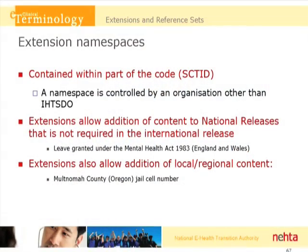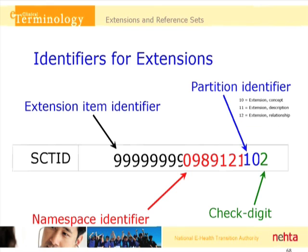There can also be local or regional content, such as a concept from Multnomah County, Oregon. Here's a diagram of the SNOMED Clinical Terms identifier, with the seven digits of the namespace identified. In the partition identifier, a one in the third digit represents that the next seven digits are the namespace. The extension item identifier takes the other eight digits, and the check digit is on the right. That's a little bit about extensions.